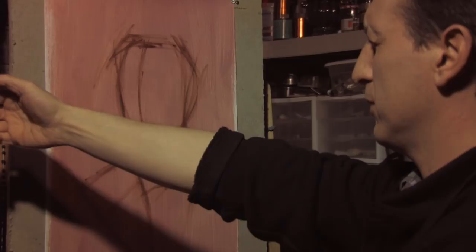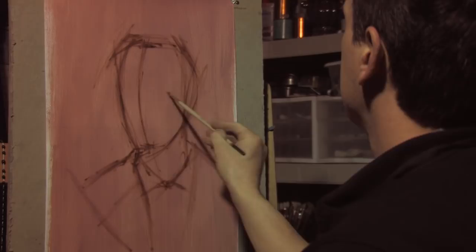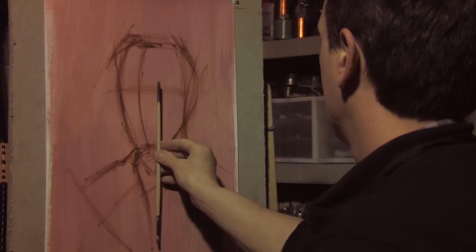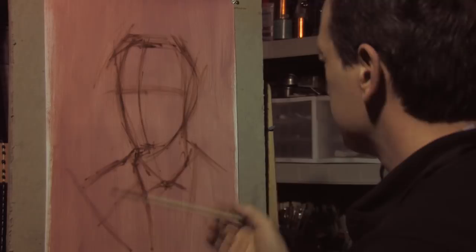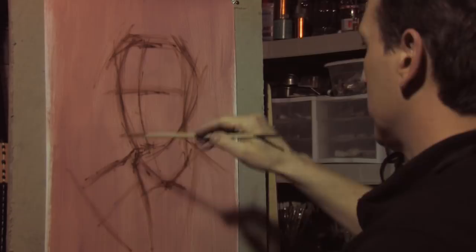A little center line. A quick measurement. See where his eyes are. Confirm that they're in the middle of his head. A quick measurement. Drop that just a little bit.